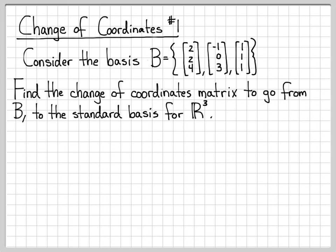So (1, 0, 0) is the first vector, (0, 1, 0) is the second vector, and (0, 0, 1) is the third vector. There's always a 1 in the i-th coordinate of the i-th vector. In this problem, we're going to find a matrix that lets us go from this coordinate system, where we're writing things as linear combinations of these vectors, to the standard basis for R3.